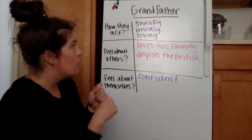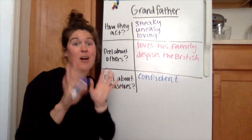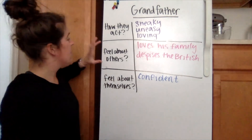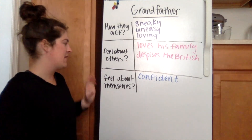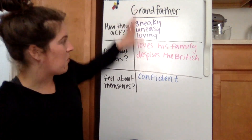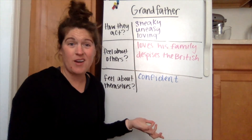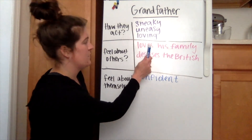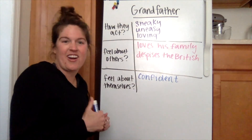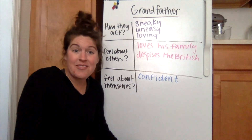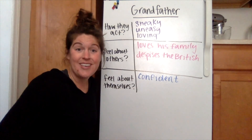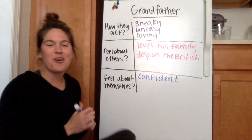So let's review quickly. When you are analyzing characters, think about: how they act in the book, how they feel about others, and how they feel about themselves. Looking at the answers to those three questions gives us a really good glimpse of who Grandfather is — a confident man who loves his family but also despises the British. He acts sometimes sneaky or uneasy and sometimes even loving. And that's from just 16 pages of the first chapter. We've already got a great picture of Grandfather.